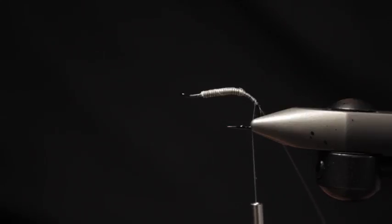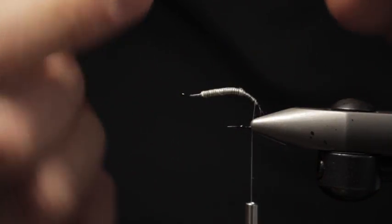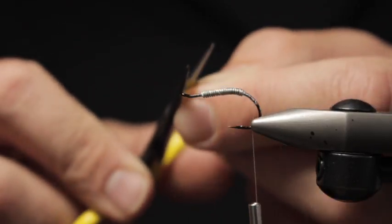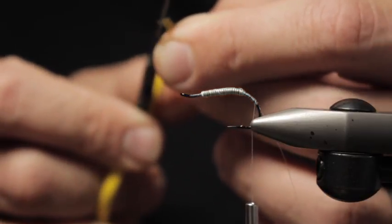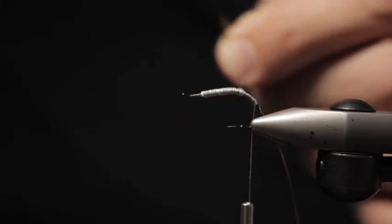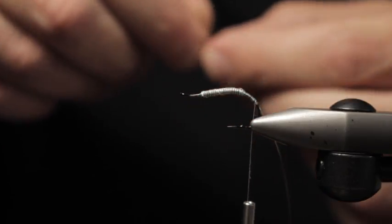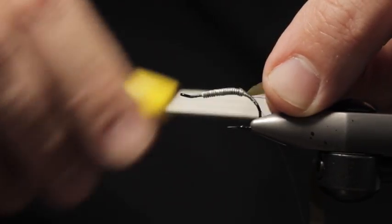And next up we're just going to use a little bit of scudback. You can vary this. This happens to be kind of a brownish color, and it's not as opaque as some of the other ones, but it's kind of an olive brown. So it's just going to simulate the tan side of the caddis. As you know, most bugs will have a light and a dark side to them. And I just like to accentuate that quite a bit.